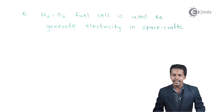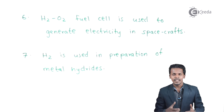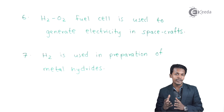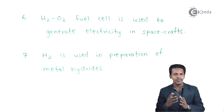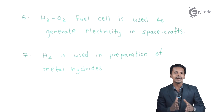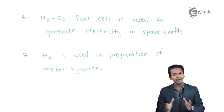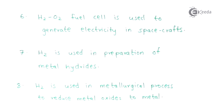Research is still ongoing to produce a very clean fuel and a clean source of electricity. The next point is that hydrogen is used in the preparation of metal hydrides. Metals from S-block, P-block, and D-block elements are able to react with hydrogen to produce metal hydrides. These hydrides are classified into various groups, which will be discussed in the next lecture.